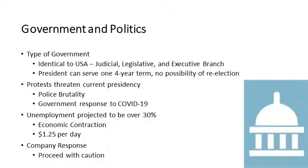The government is under a lot of pressure because of protests and COVID-19. There have been protests over police brutality, including some violent protests. Government regulations related to COVID-19 have caused an economic contraction. Unemployment has risen to 21% and is projected to go over 30% by the end of the year. Some people live off of US$1.25 per day. This implosion of their economy is critical in our investment decisions. If we intend to market consumer goods within Colombia, we need to proceed with caution and consider consumer purchasing power. If we are investing in goods that increase economic output, such as agricultural technology, we would be wise to invest aggressively while interest rates are favorable.